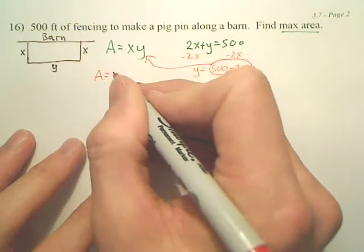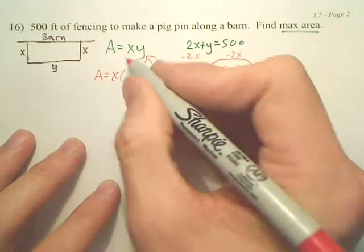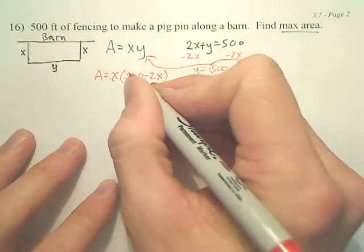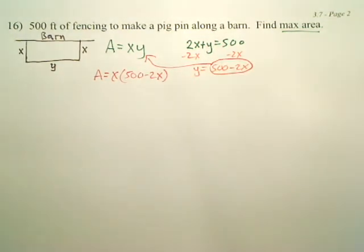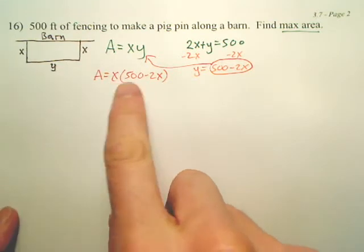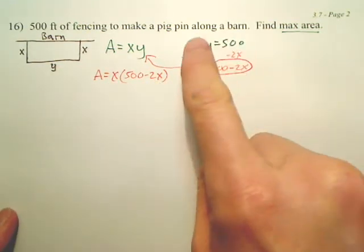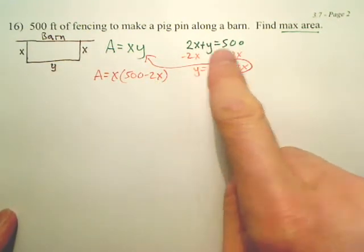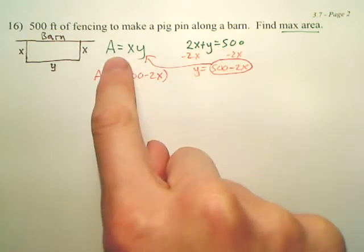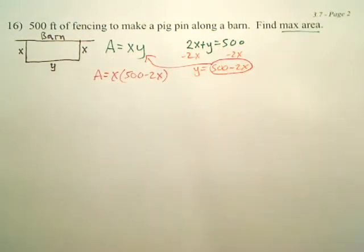Now, you have x times 500 minus 2x. That is my new equation. This equation relates to the information here. This is your secondary. This is your primary. I want to derive this to maximize.